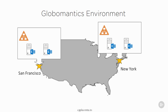The Globomantics environment involves four Exchange servers distributed across two different data center locations. There are two servers in San Francisco and two servers in New York, all part of the same Active Directory forest and the same Exchange organization.